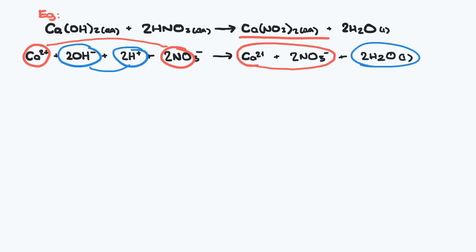Obviously this can be represented by a net ionic equation. Since the calcium nitrate is really just dissociated and floating in solution, the formation of water is your net ionic equation.